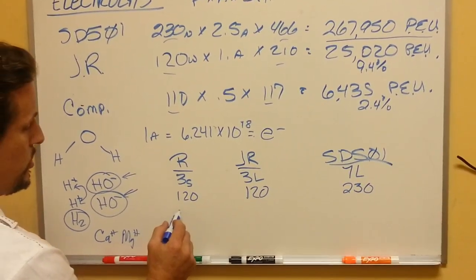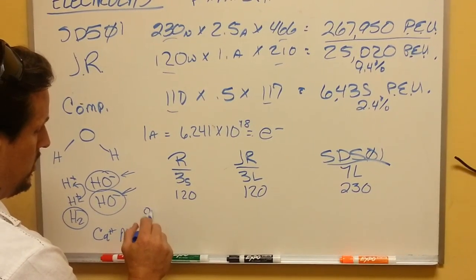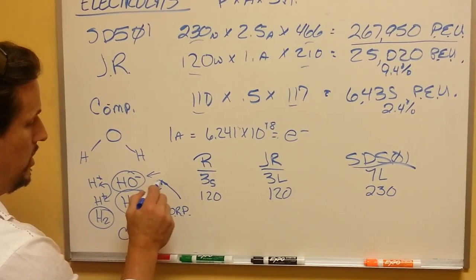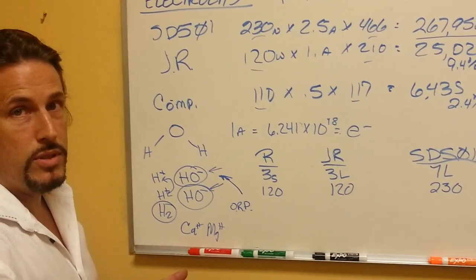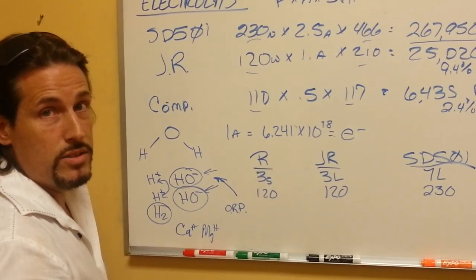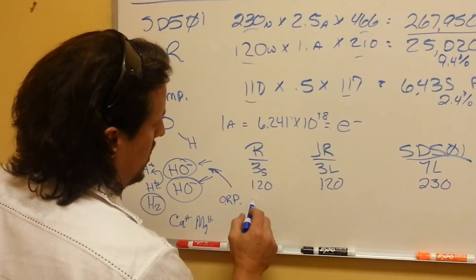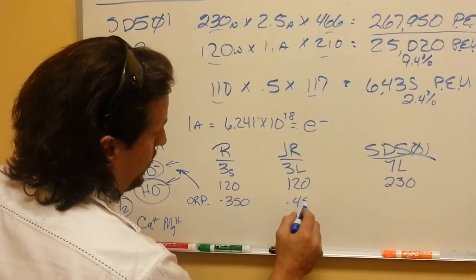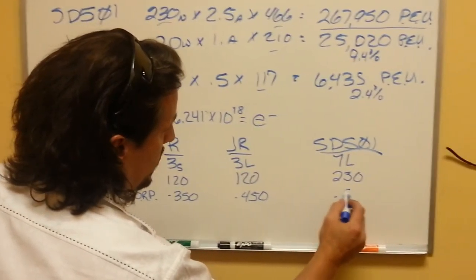This produces an ORP. That means oxidation reduction potential. It's actually a millivoltage on the water, but it's the ability to act as free radical scavengers, energize the cells. And this is negative 350, negative 450, and negative 800.